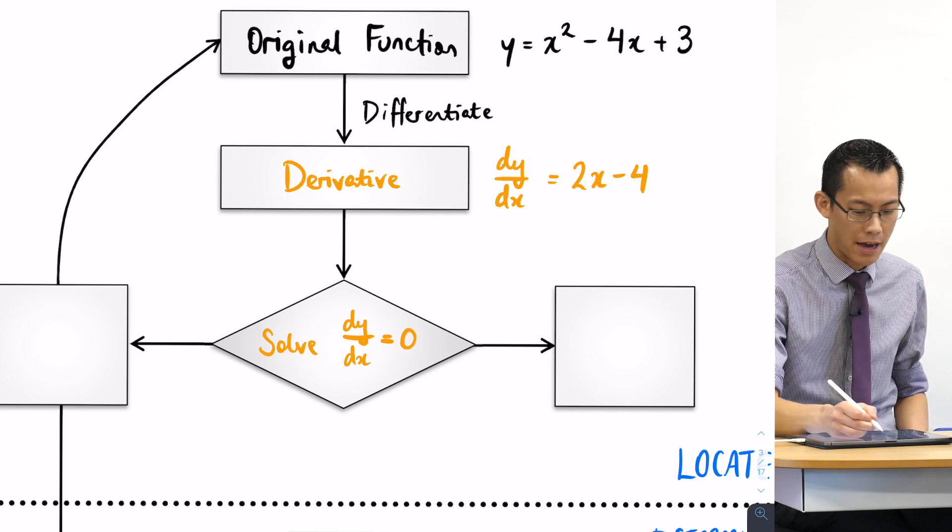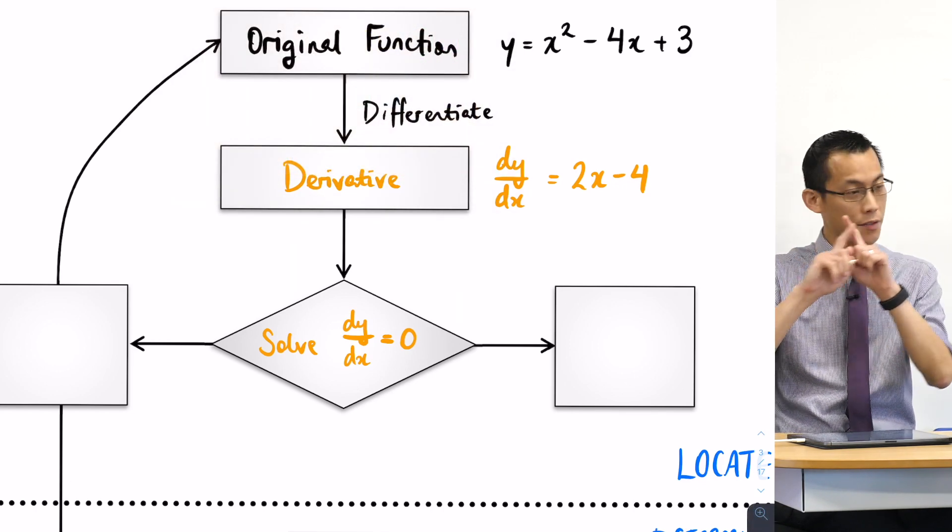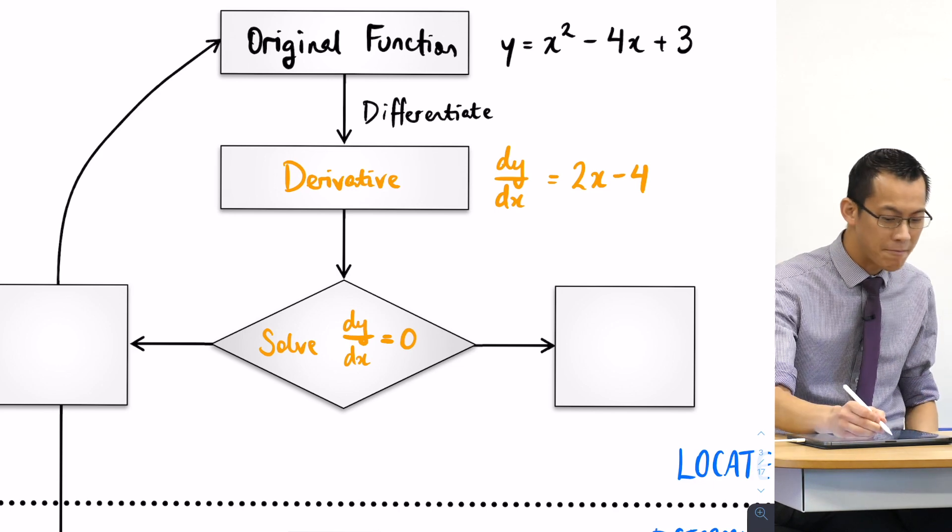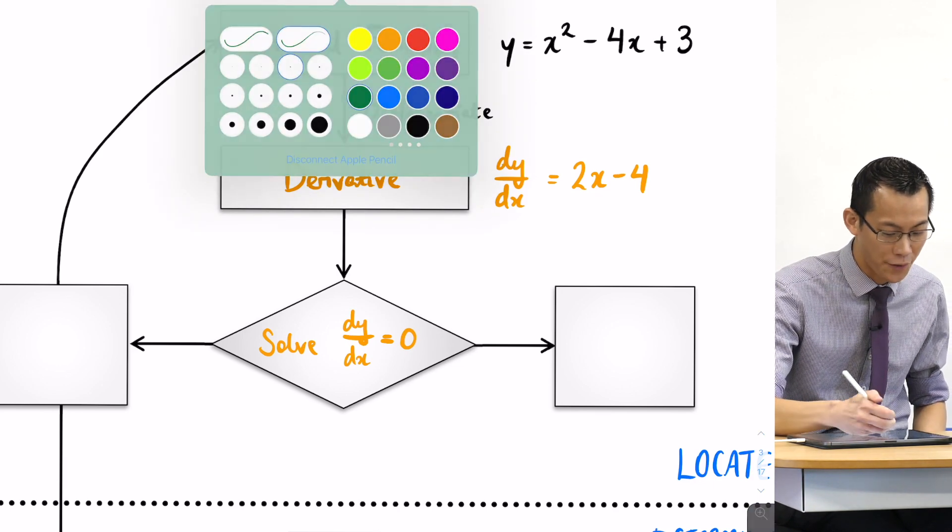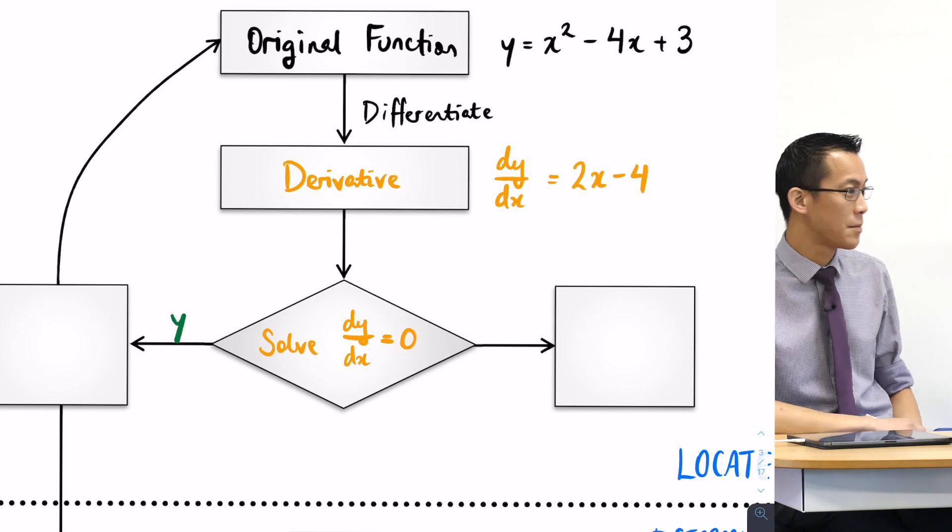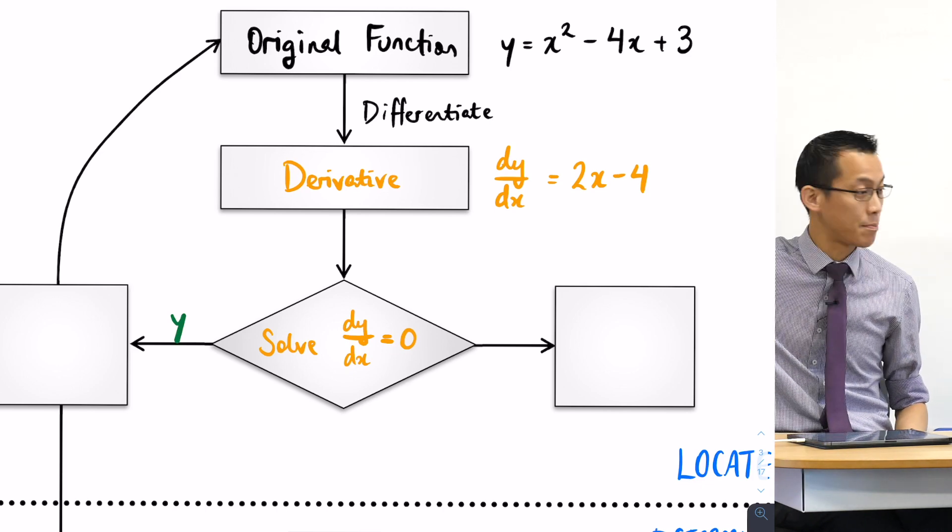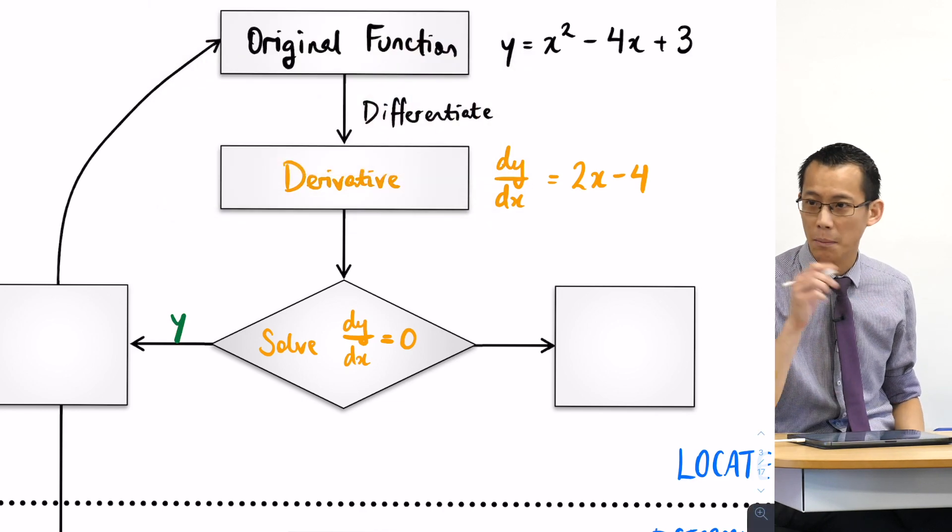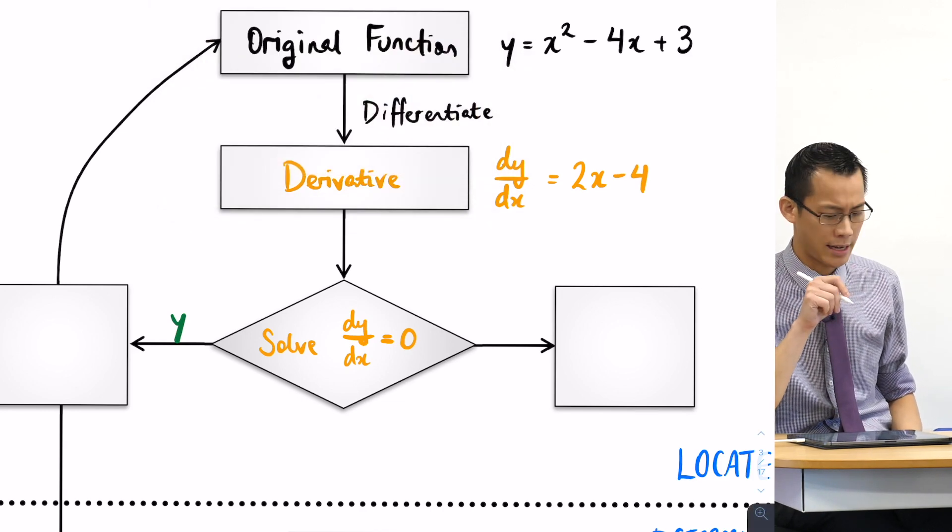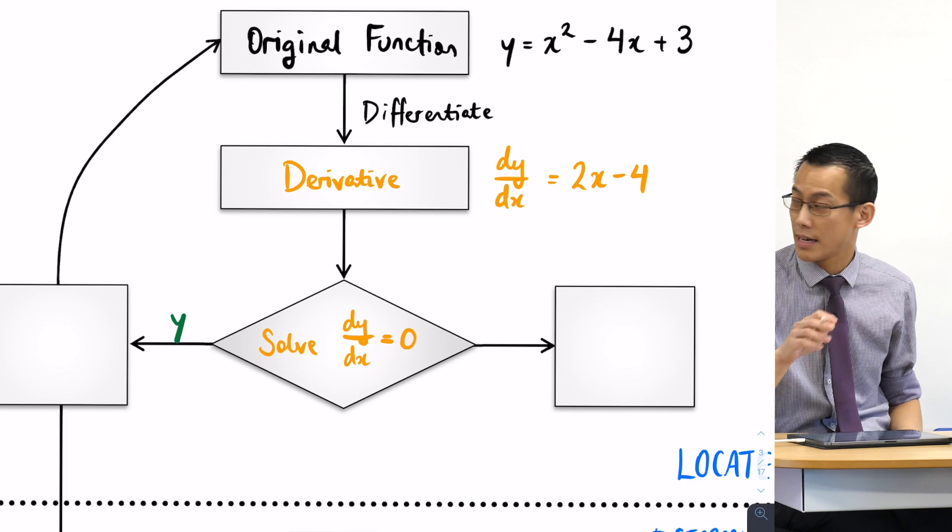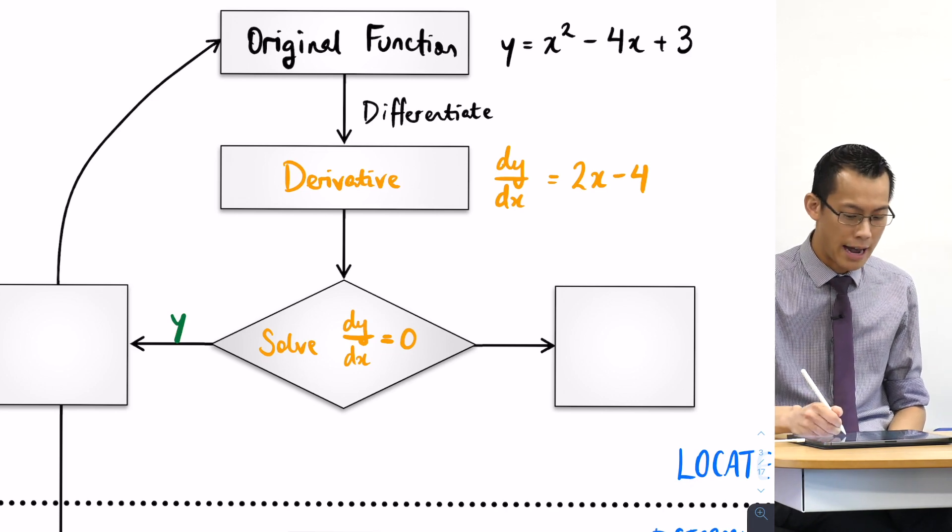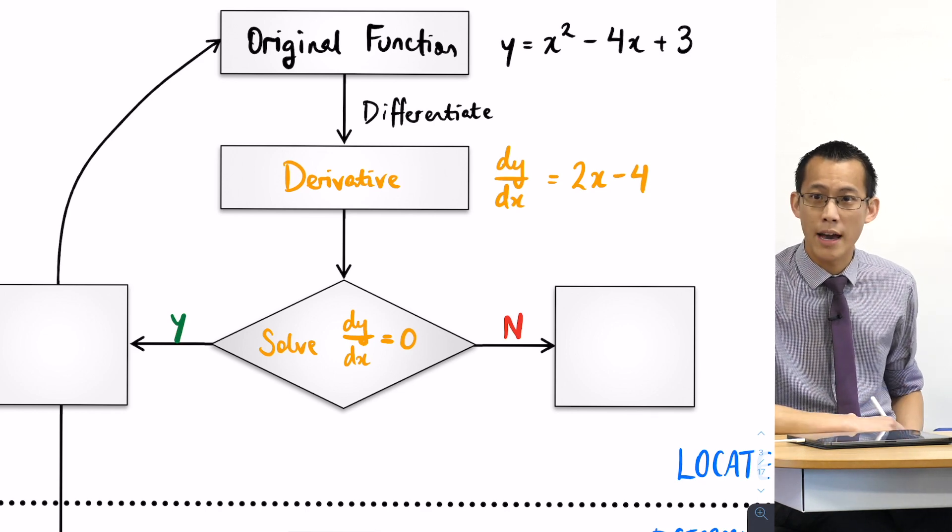Before we do, there's one of two things that happens after this occurs. You will solve it and in most situations you're going to find there are some stationary points. But it's just as important to recognize that sometimes you try to do this and you can't do it. There's no solution that arrives.